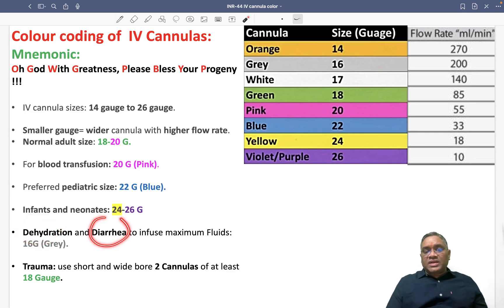When you're attending a patient with dehydration and diarrhea and want to give maximum fluid - this was a question in the exam - you should use 16 gauge or gray color. Gray color is for dehydration and diarrhea because you have to give maximum fluid.